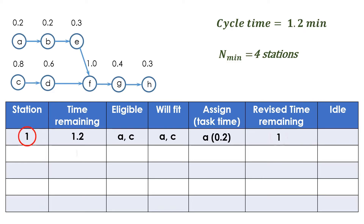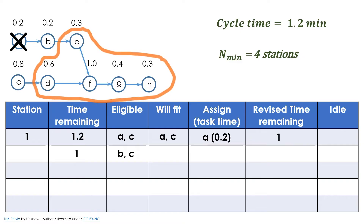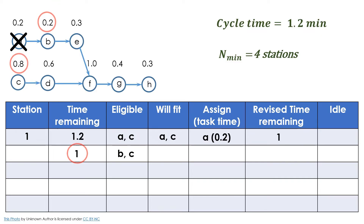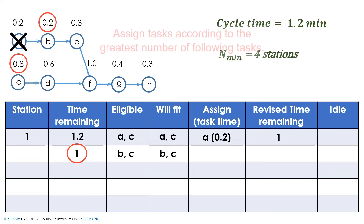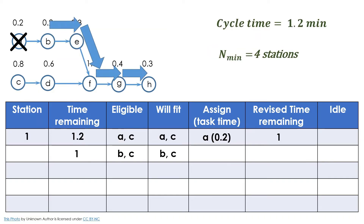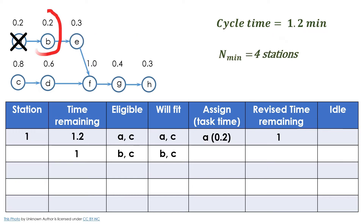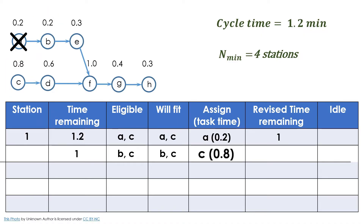The next eligible tasks are tasks B and C, as task A is already assigned. Both B and C fit within station 1's remaining time of 1 minute. Task B has four following tasks, the same as task C. Here we have a tie, so we use the tiebreaker of assigning the task with the longest processing time first. Task B's time is 0.2 minutes, while the time of task C is 0.8 minutes. Consequently, assign task C to station 1.